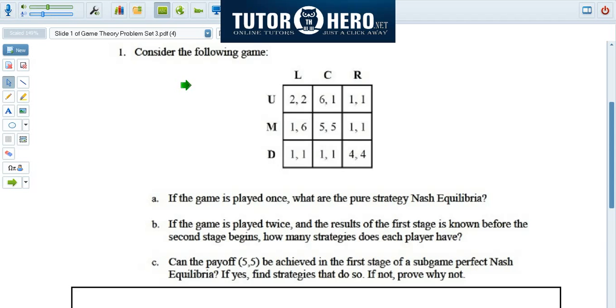So here we're given a game. How does this game work? Well, one player, the row player we often call them, chooses a row—they can go up, middle, or down. And another player, the column player, chooses a column—they can go left, center, or right.